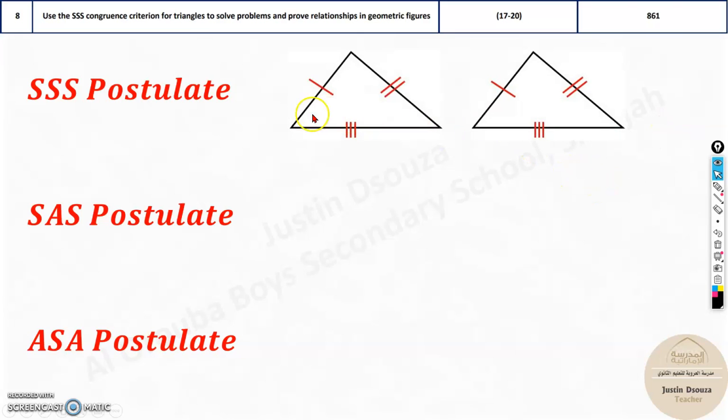Now, say for example, there are two triangles over here. If all the sides are equal to each other, this side and these sides are equal, then these two triangles are definitely congruent.